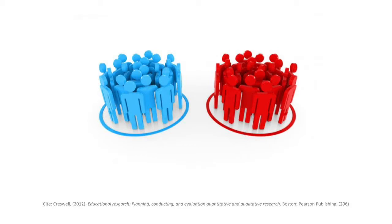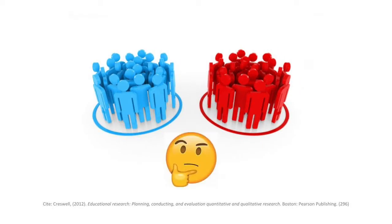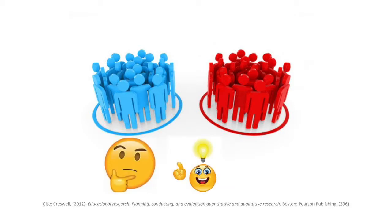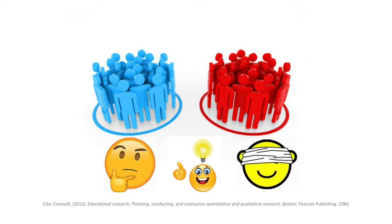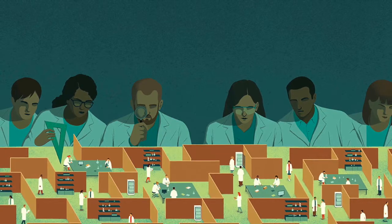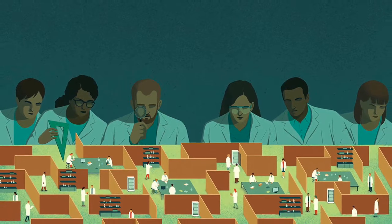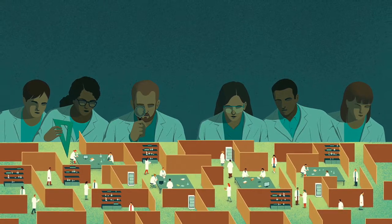For much of the next 50 years, most experimental research was done with control groups and random assignment within these groups. It was not until the 1960s where Campbell and Stanley identified the major types of experimental design — 15 in total — that are still quite popular today.